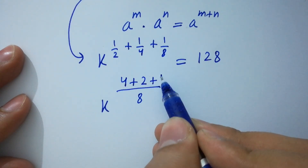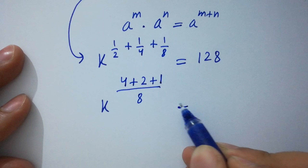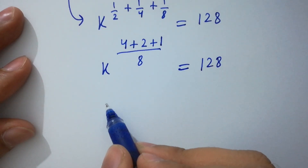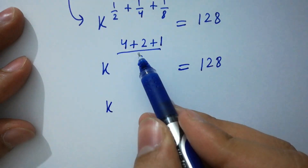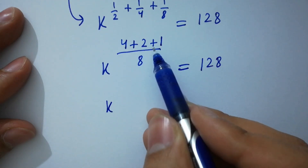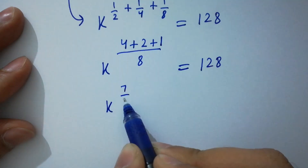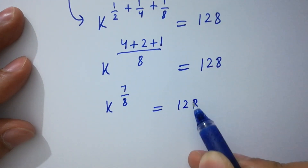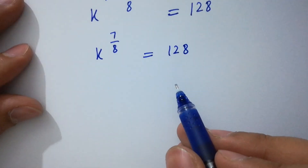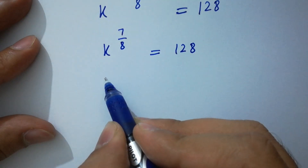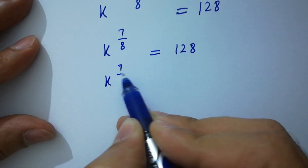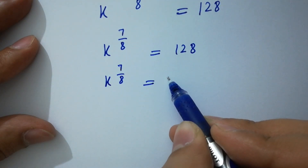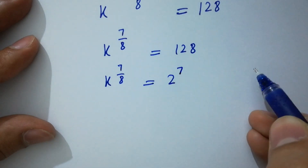1 over 2 plus 1 over 4 plus 1 over 8 equals 4 over 8 plus 2 over 8 plus 1 over 8 equals 7 over 8. So we have k to the power 7 over 8 equals 128.